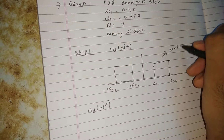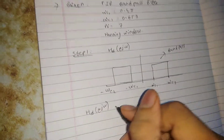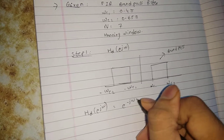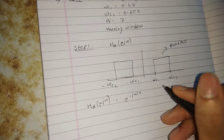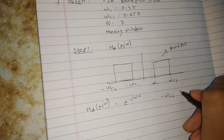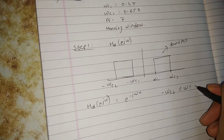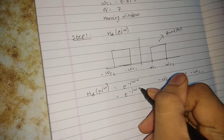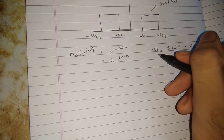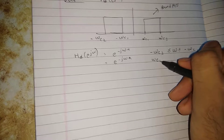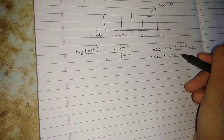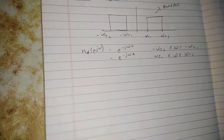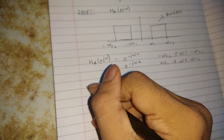Write the equation: HD(e^jω) = e^(−jωα) for the ranges −ωc2 ≤ ω ≤ −ωc1 and ωc1 ≤ ω ≤ ωc2, and zero otherwise. After writing these equations you may proceed towards step number two.